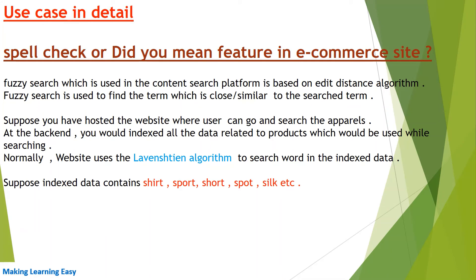The spell check or 'Did you mean' feature in an e-commerce site uses fuzzy search at the back end, which is based on the edit distance or Levenshtein distance algorithm. Fuzzy search is used to find terms which are close or similar to the search term. Suppose you have hosted a website where users can search for apparel — at the back end, all product data would be indexed, and that index is used to search for particular terms.